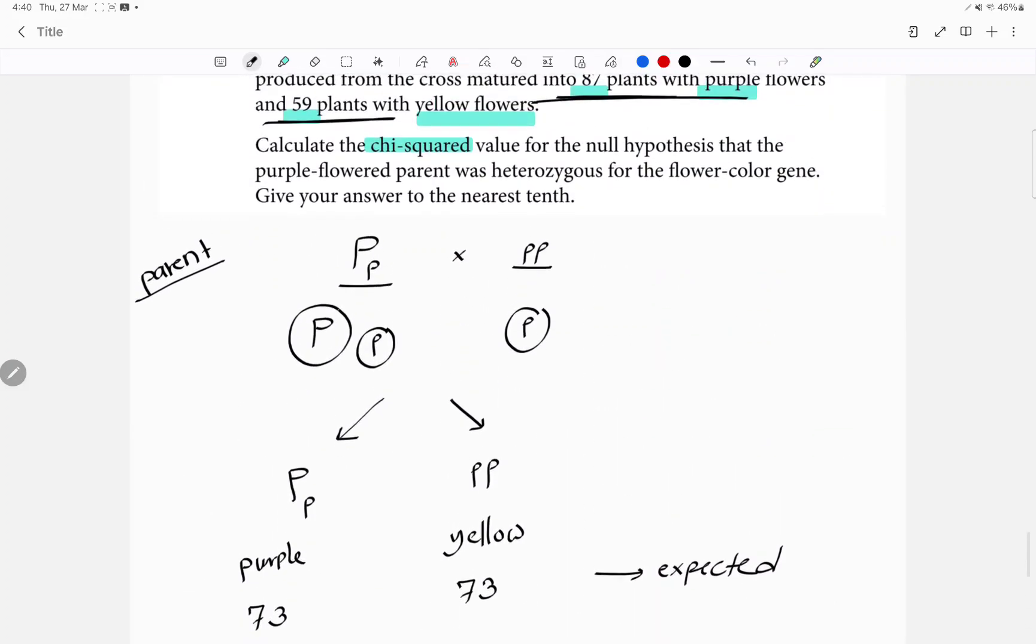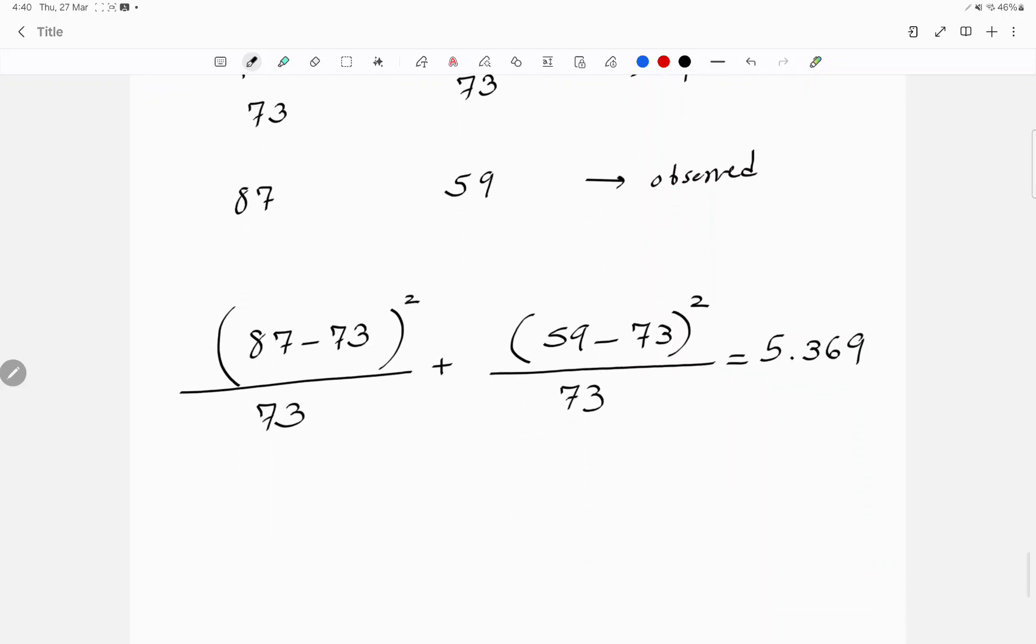But the question says round to the nearest tenth. So I'm going to make it as 5.3 or 5.4 also correct.